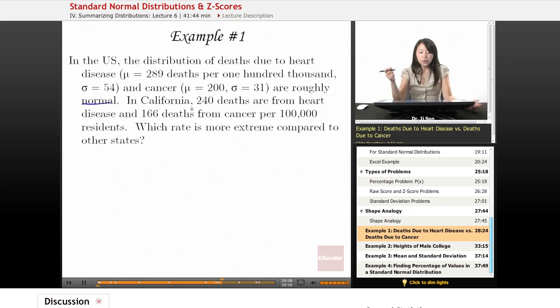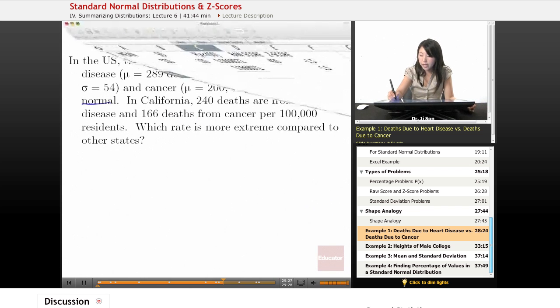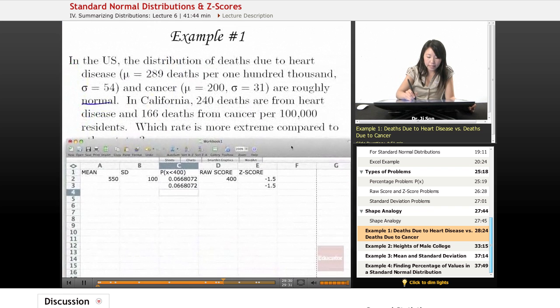So we have California's death rates from heart disease and its death rates from cancer, and we want to know which of these are really extreme. One way that we could find out is by finding out the z-scores. I'm going to get my Excel out.